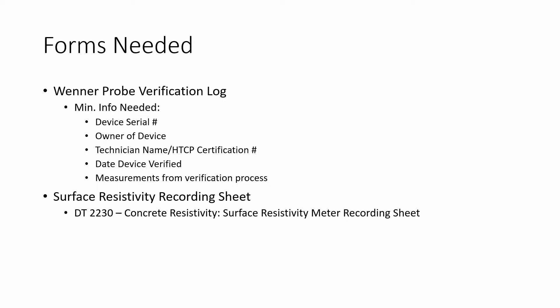The Wenner probe verification log needs to have the following minimum information: the device serial number, the owner of the said device, the technician name along with their HTCP certification number, the date the device was verified, and measurements from the verification process. You will also need the surface resistivity recording sheet. There is a recording sheet available on the DOT website, and it is called DT 2230.